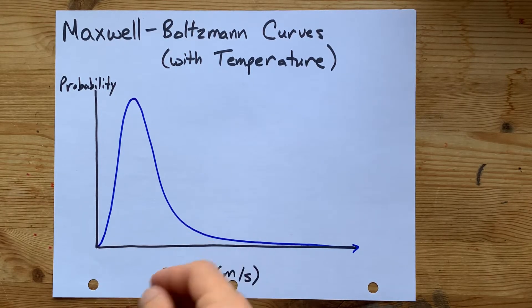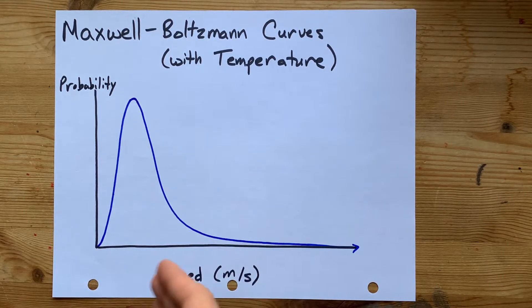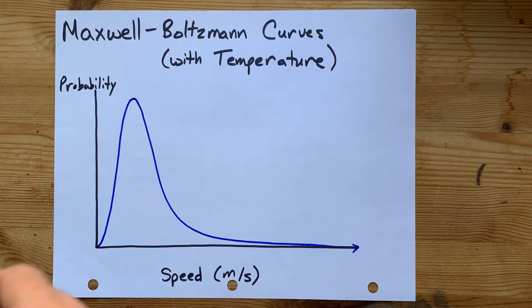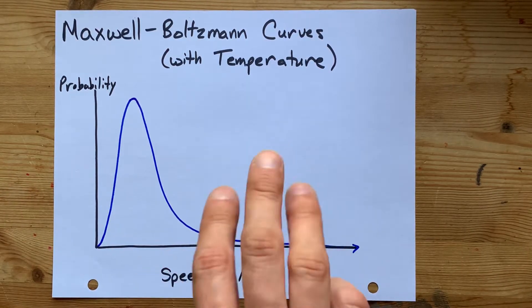Maxwell-Boltzmann distributions are a way to visualize how fast molecules probably are, depending on temperature, molecular mass, etc.